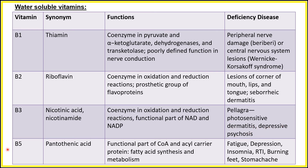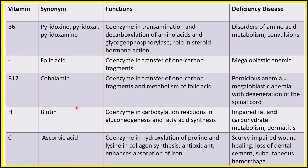Vitamin B5 is called pantothenic acid. It is the functional part of coenzyme A and acyl carrier protein, mainly involved in fatty acid synthesis and metabolism. Deficiency disease is not serious but includes fatigue, depression, insomnia, respiratory tract infections, burning sensations, and stomach aches.